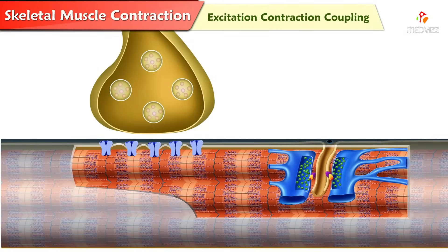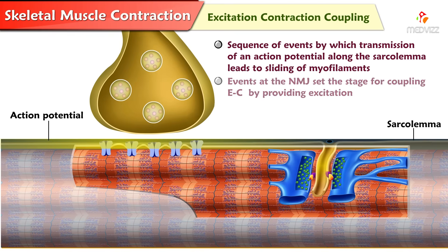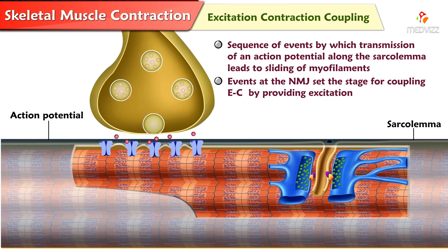Excitation-contraction coupling of skeletal muscle. Excitation-contraction coupling is the sequence of events by which transmission of an action potential along the sarcolemma leads to sliding of myofilaments. The events at the neuromuscular junction set the stage for excitation-contraction coupling by providing excitation. Released acetylcholine binds to receptor proteins on the sarcolemma and triggers an action potential in a muscle fiber.